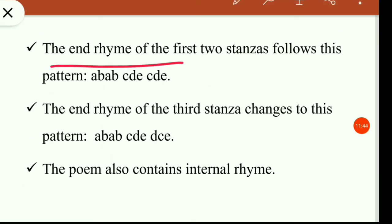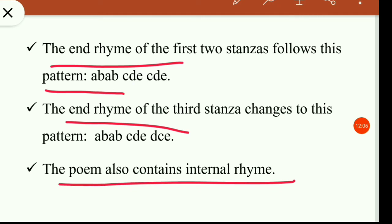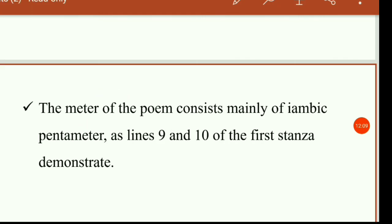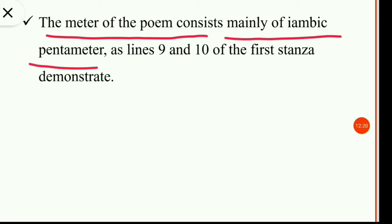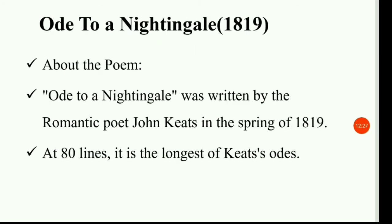The end rhyme of the first two stanzas follows this pattern: A-B-A-B-C-D-E-C-D-E. The end rhyme of the third stanza changes to: A-B-A-B-C-D-E-C-D-D-C-E. The poem also contains internal rhyme. The meter of the poem consists mainly of iambic pentameter, as lines nine and ten of the first stanza demonstrate.